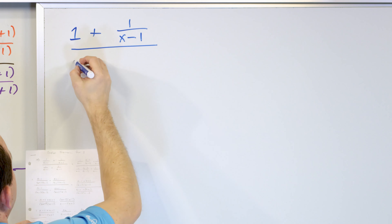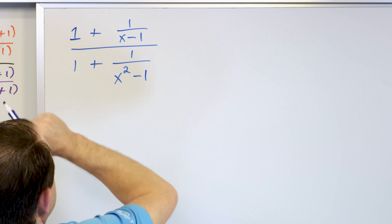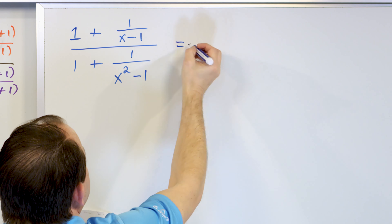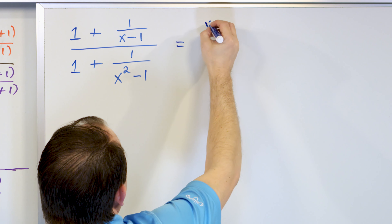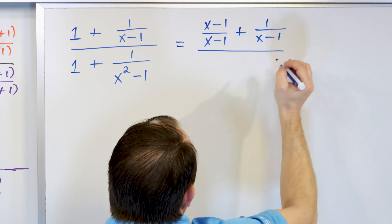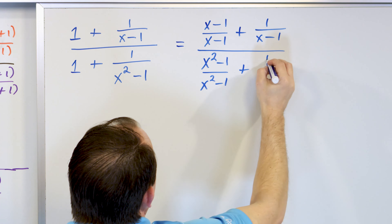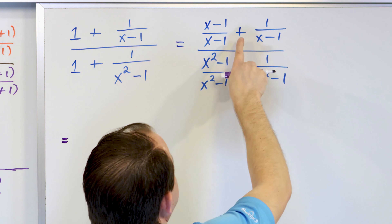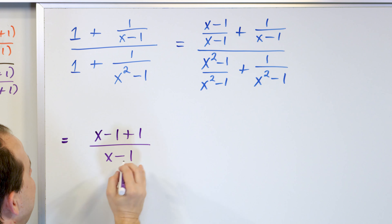Next problem. What if we have 1 plus 1 over (x-1) in the numerator, and 1 plus 1 over (x²-1) in the denominator? Looks very similar. You should know you can't start canceling linked terms with pluses and minuses, but you can try to add those fractions. This one's easier because I have 1s, and anything over itself is 1. Since the denominator is (x-1), I'll write the 1 as (x-1) over (x-1).